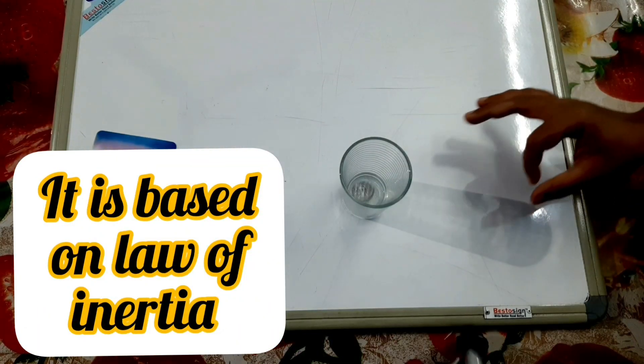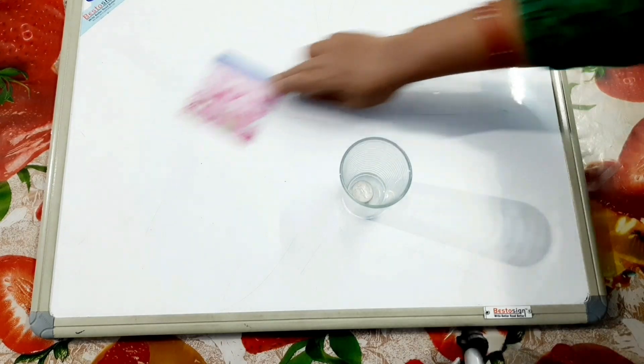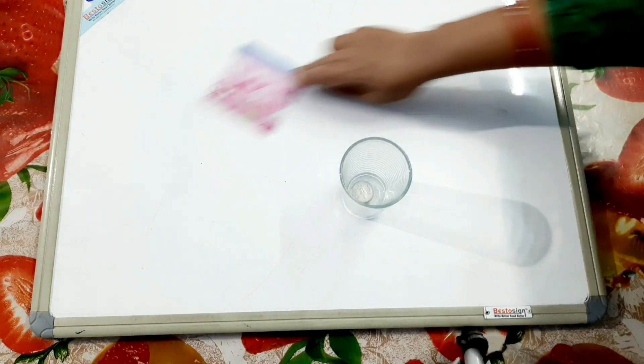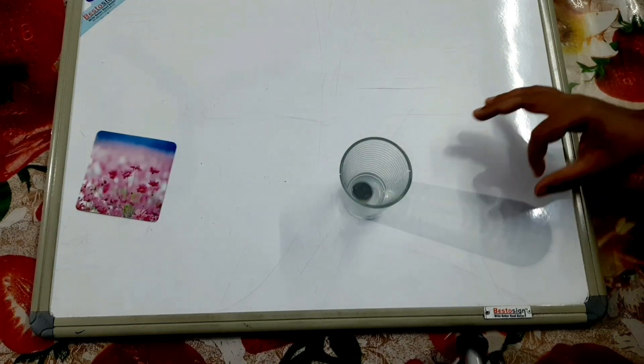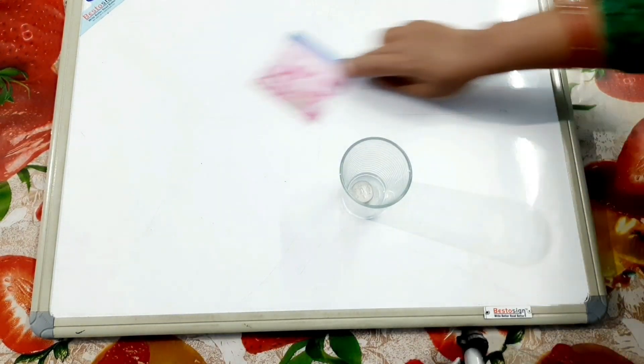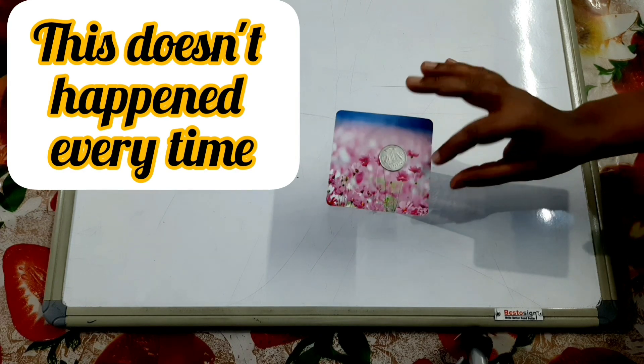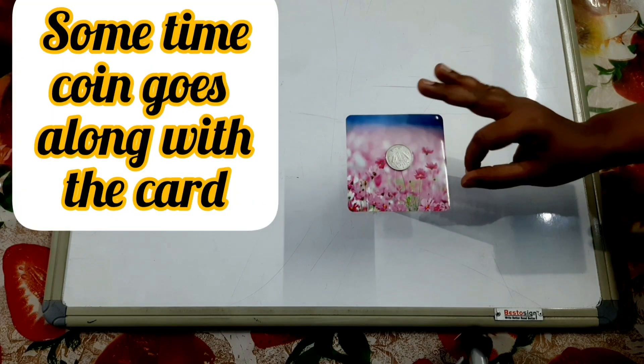Because we applied force on the card, so the card moved. But because of inertia, the coin will remain in its position and gets into the glass. But this doesn't happen every time. Sometimes the coin moves along with the card.